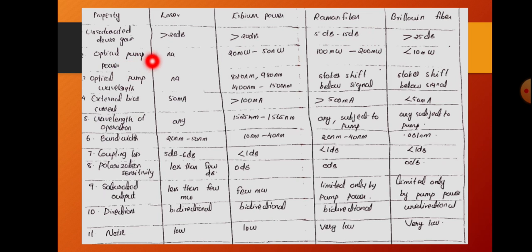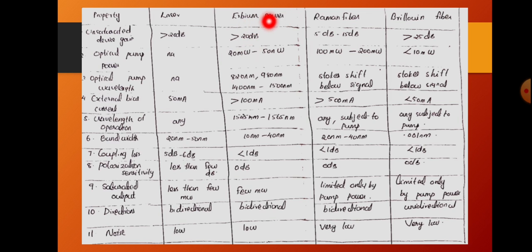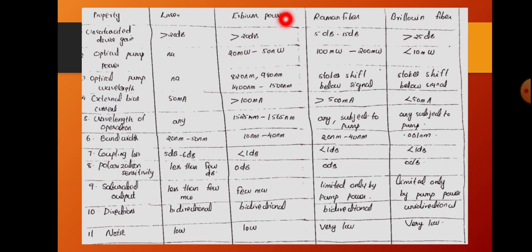When comparing optical pump power, it is not applicable to laser diodes as there is no limited value — it is a source. In the case of erbium fiber, it requires different pump signals at different wavelengths such as 980 nm, 1400 nm, and 1500 nm. The erbium fiber pump power will be in the range of 20 mW to 50 mW.